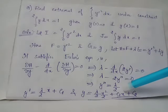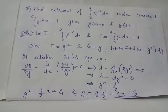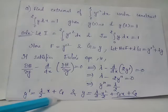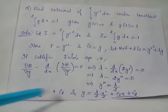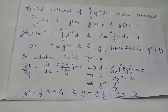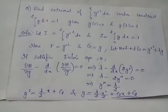Integrating y″ = λ/2 with respect to x gives y′ = (λ/2)x + c₁. Integrating again gives y = (λ/4)x² + c₁x + c₂, where c₁ and c₂ are arbitrary constants of integration.